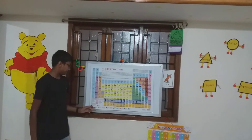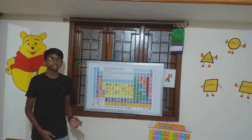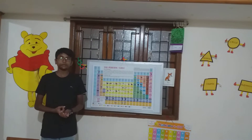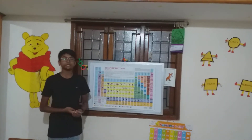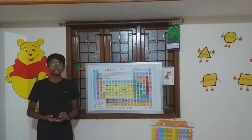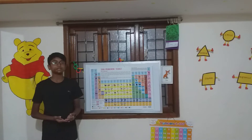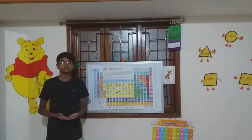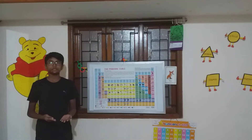They are: lanthanoids, actinoids, alkaline metals, alkaline earth metals, other metals, metalloids, transition metals, unknown metals, halogens, and non-metals.